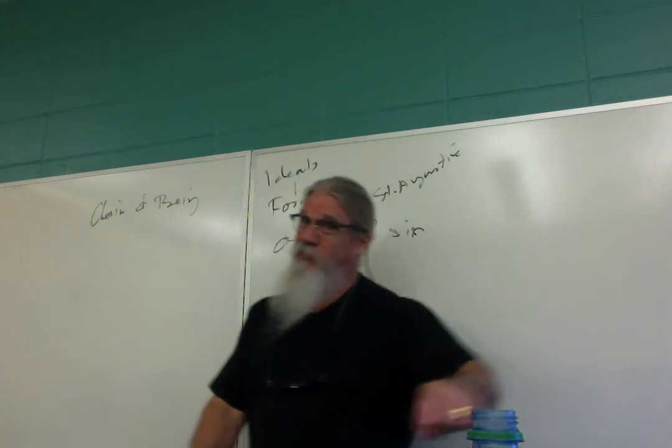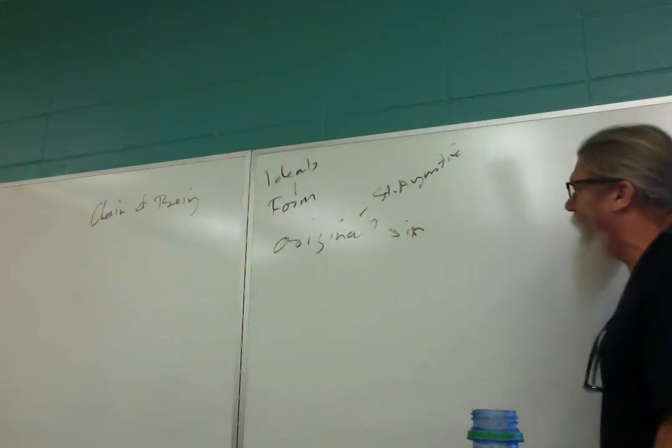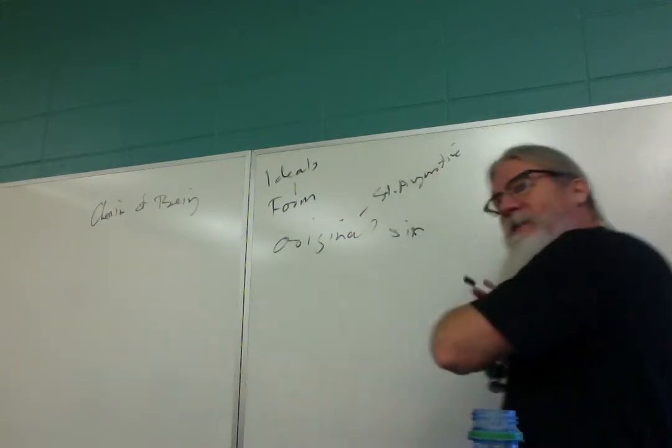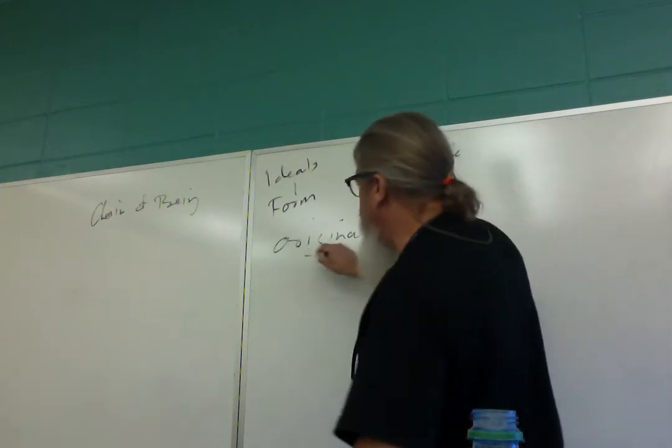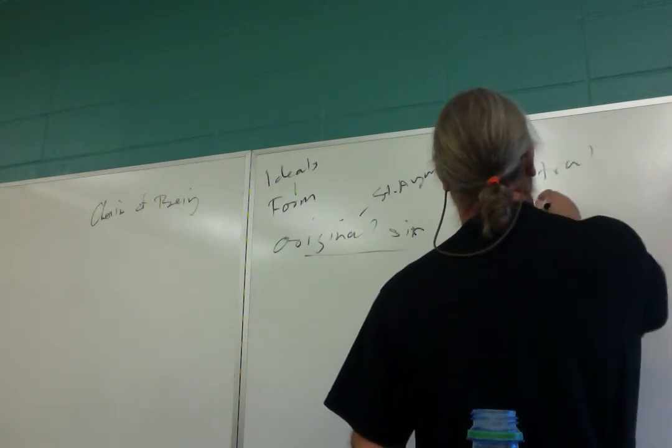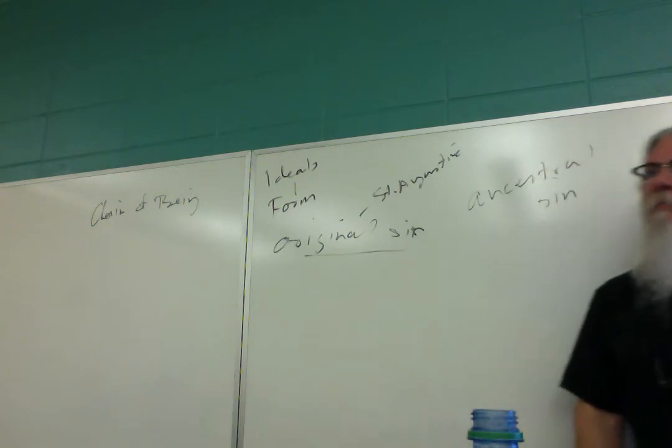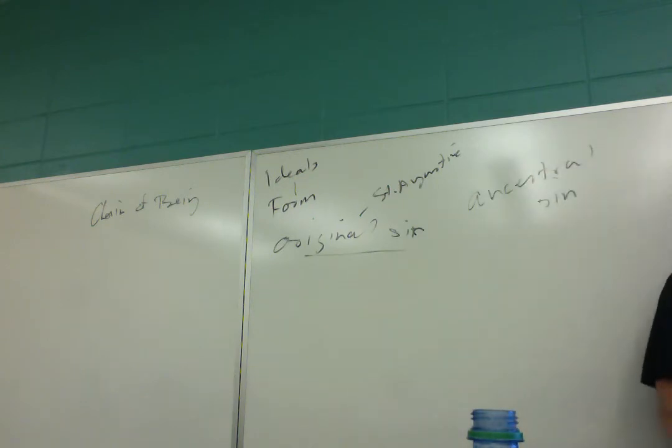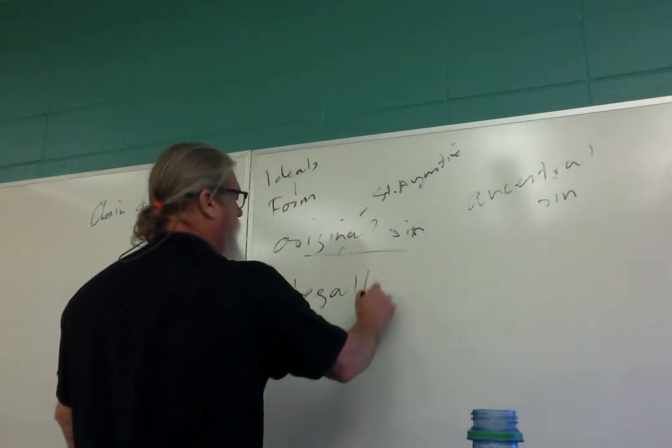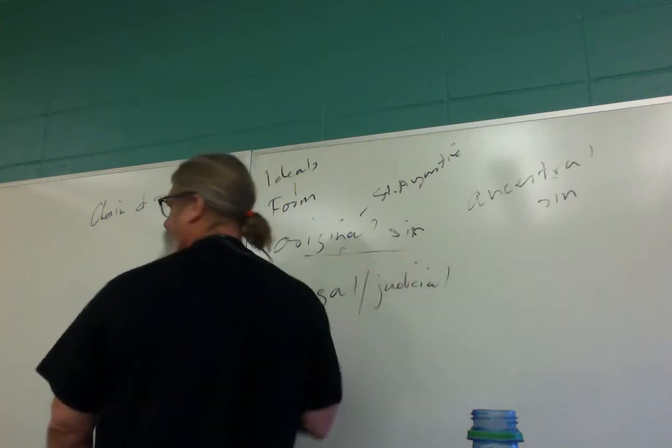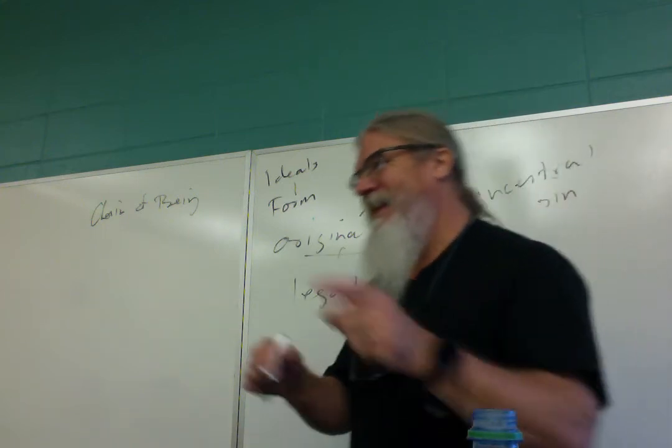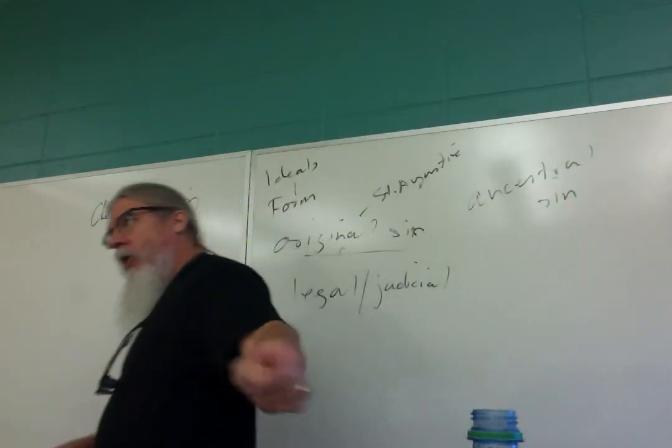St. Augustine is a western sin. In the eastern church, it was never called this. Ever. It was always called the ancestral sin. Meaning, the sin of the first ancestor. See, this idea is legal, judicial. Adam sinned, Adam and Eve sinned. Therefore, they brought guilt upon all of their heirs.